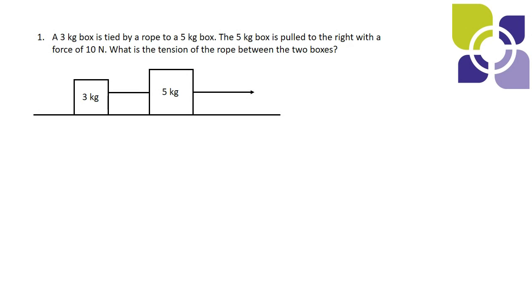This is a common type of tension problem we're going to encounter in physics 11. A 3-kilogram box is tied by a rope to a 5-kilogram box. The 5-kilogram box is pulled to the right with a force of 10 newtons. The question is: what is the tension of the rope between the two boxes?